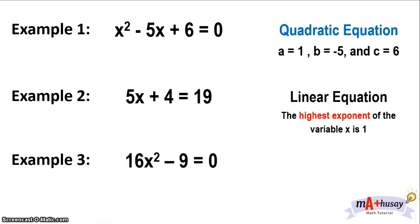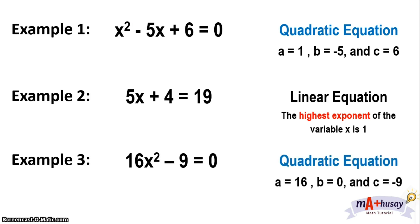Example number three: 16x squared minus 9 equals 0. This is an example of a quadratic equation where A is equal to 16, B is equal to 0, and C is equal to negative 9. This means we don't have a linear term, so this quadratic equation is in the form ax squared plus c equals 0.